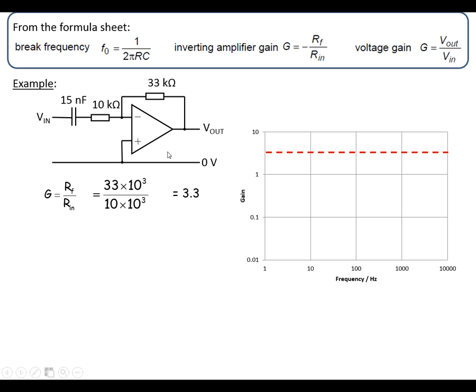We need to know what the break frequency is, so we do 1 over 2π RC, and we choose the resistor that's in the same part of the circuit as the capacitor. And if we calculate this, it comes out to being about 1 kHz, so we can mark it on here.